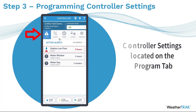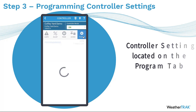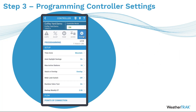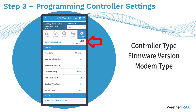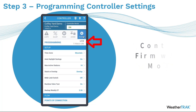Across the navigation toolbar, we start on the Alerts tab, but we want to look at the Program tab. Select Program and this gives us access to all of our controller level programming. The first thing you see on this page is the type of controller you have, the version of firmware it's running, and the type of modem installed on that controller.